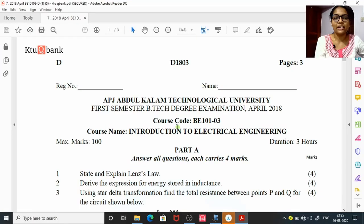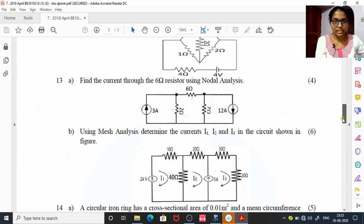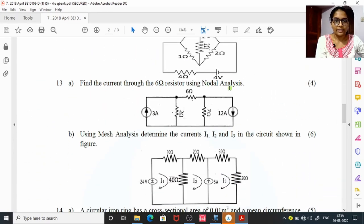Hi friends, welcome to this channel by ACO BeatTech. Let us start doing electrical engineering question paper. There is a frequently asked question that is nodal analysis. 13A, find the current through 6 ohm resistor using nodal analysis, it carries about 4 marks.